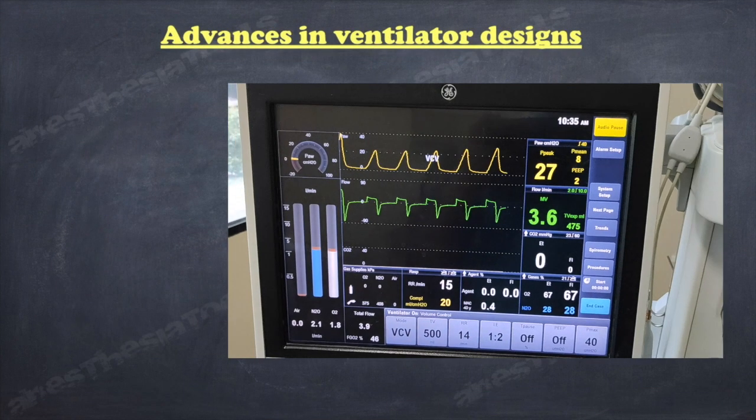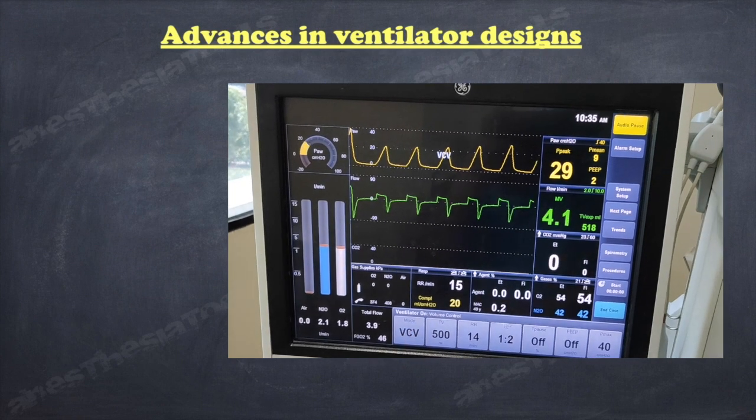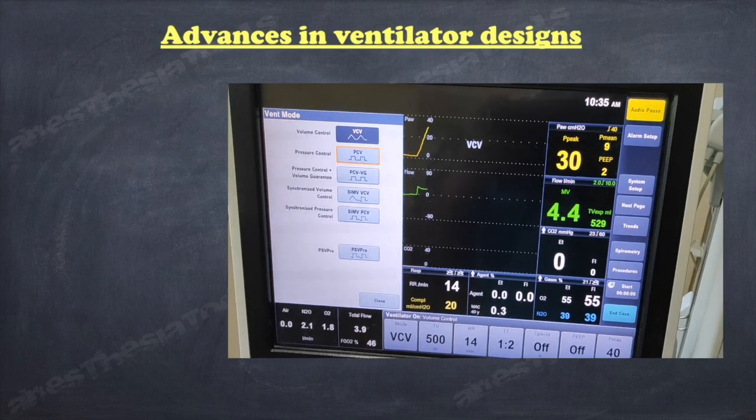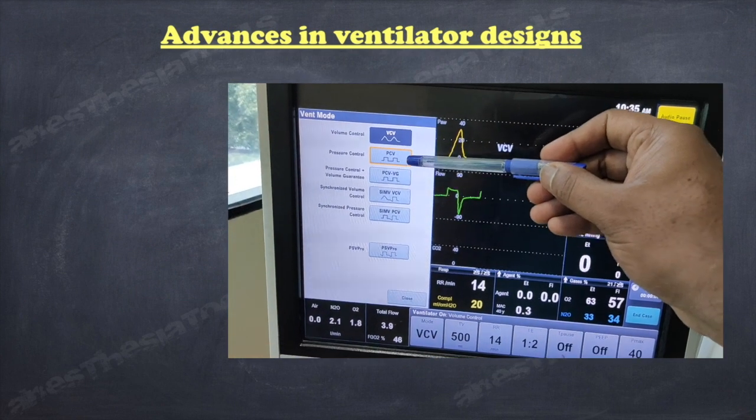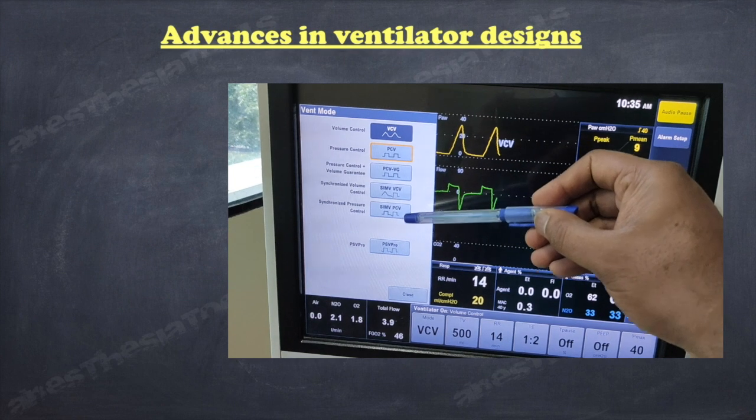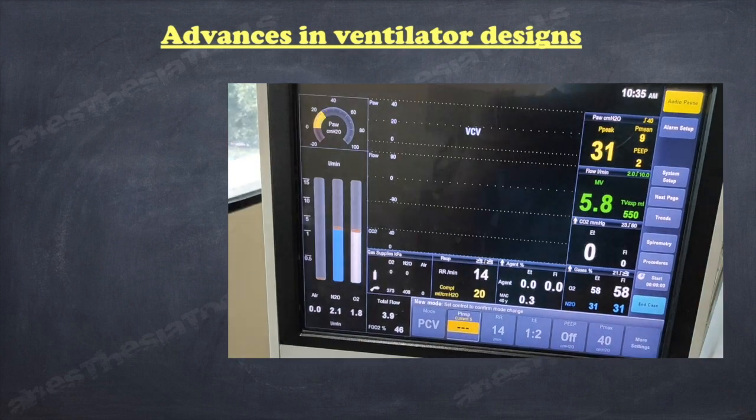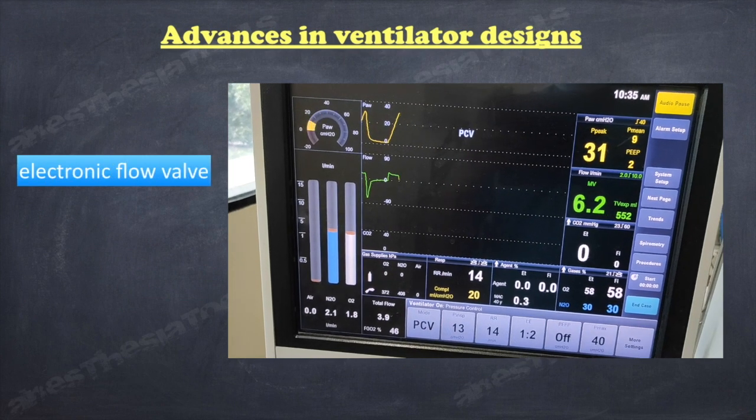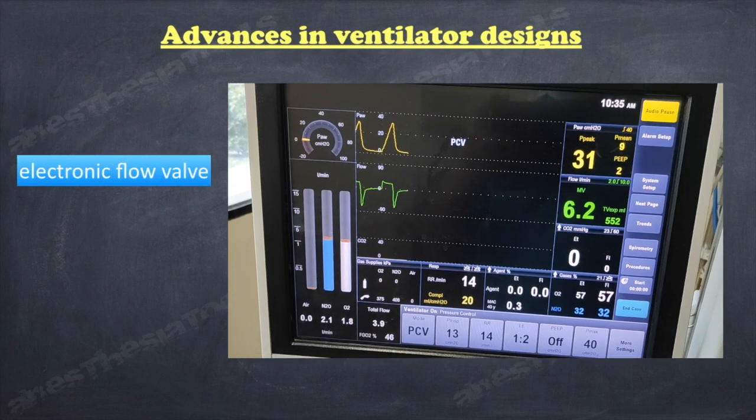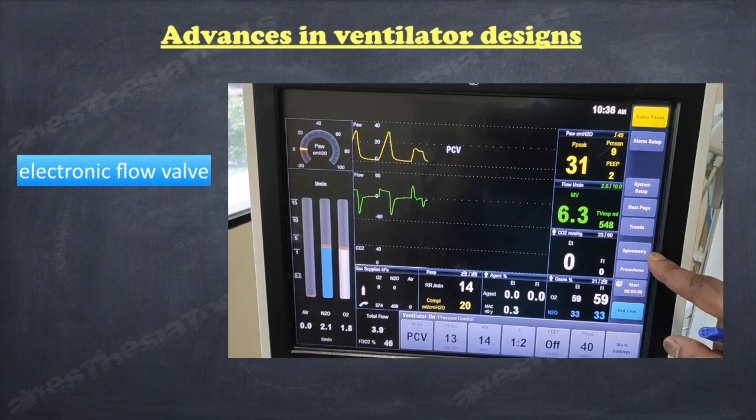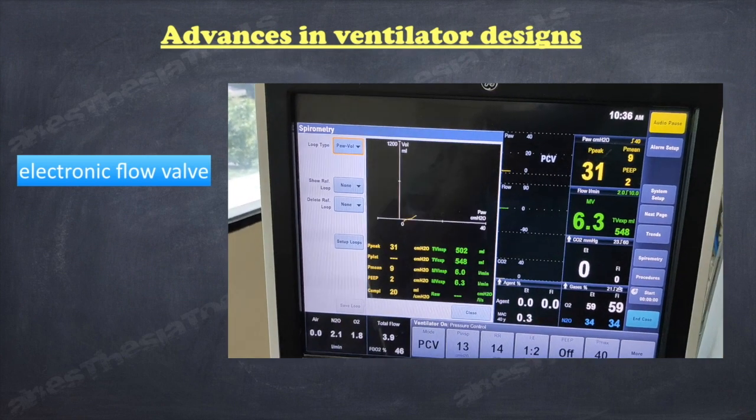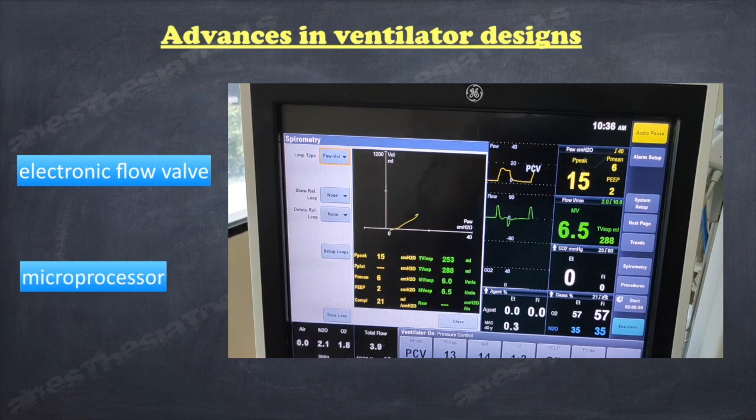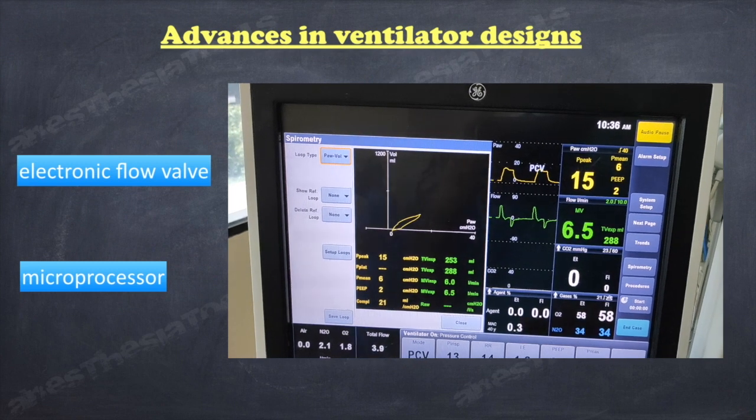Most of the recent advances in ventilator design have been due to sophisticated electronics. The two key features need some preliminary explanation in order to understand how this generation of ventilators function and perform. One of these is the electronic flow valve. This has become a major component in the driving gas pathway and has reduced greatly the number of working parts in the ventilator. The other is the programmable microprocessor that controls the operation of this valve.